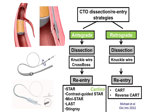The first part of understanding antegrade dissection reentry is to understand the terminology. Dissection and reentry consists of two parts: the dissection and the reentry. Dissection in the antegrade direction can happen with a knuckle wire or with a CrossBoss catheter, whereas in the retrograde direction it's only with a knuckled wire. Reentry in the retrograde direction is done in most cases using reverse CART, but in the antegrade direction there are many techniques, of which currently the Stingray is the one mainly used.